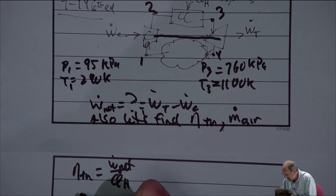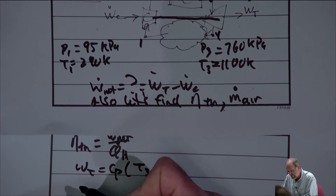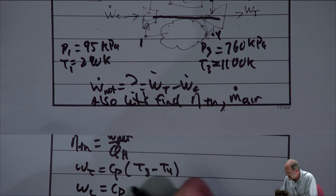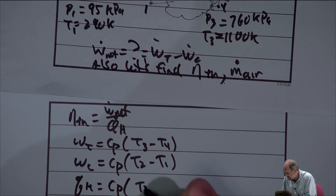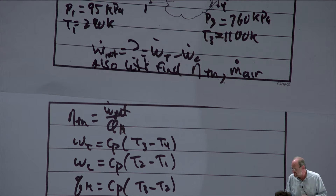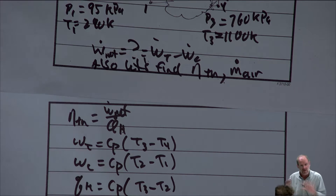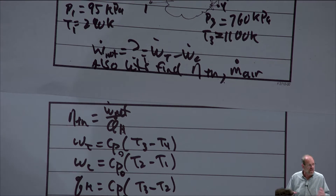We assume no kinetic or potential energy changes and no heat loss, so all work and heat transfer terms are just enthalpy changes — Cp times temperature changes for an ideal gas with constant specific heat, with Cp from table A2 part A at room temperature. We know T1 and T3, and for T2 and T4 we use the fact that the processes are isentropic: the temperature ratio equals the pressure ratio to the (k−1)/k power, both for the compressor (1 to 2) and the turbine (3 to 4).